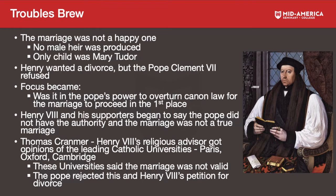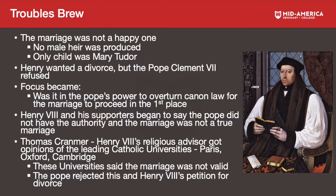But troubles brew. This first marriage was not a happy one. They produced no male heir, which was a big deal to Henry the Eighth — he was consumed with producing a male heir. They had only one child, Mary Tudor. Because they weren't having a boy, Henry wants a divorce and to ditch Catherine of Aragon.